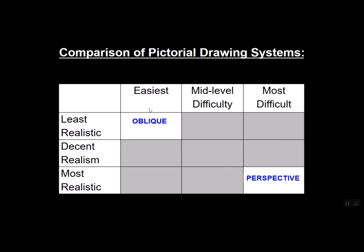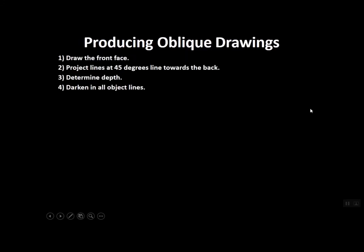Oblique projection is the easiest to create pictorial drawing method. The bad part, the trade-off, the con, is that it's the least realistic when it comes to results. But it serves a purpose, and it's a quick way to get something that looks 3D on a piece of paper.